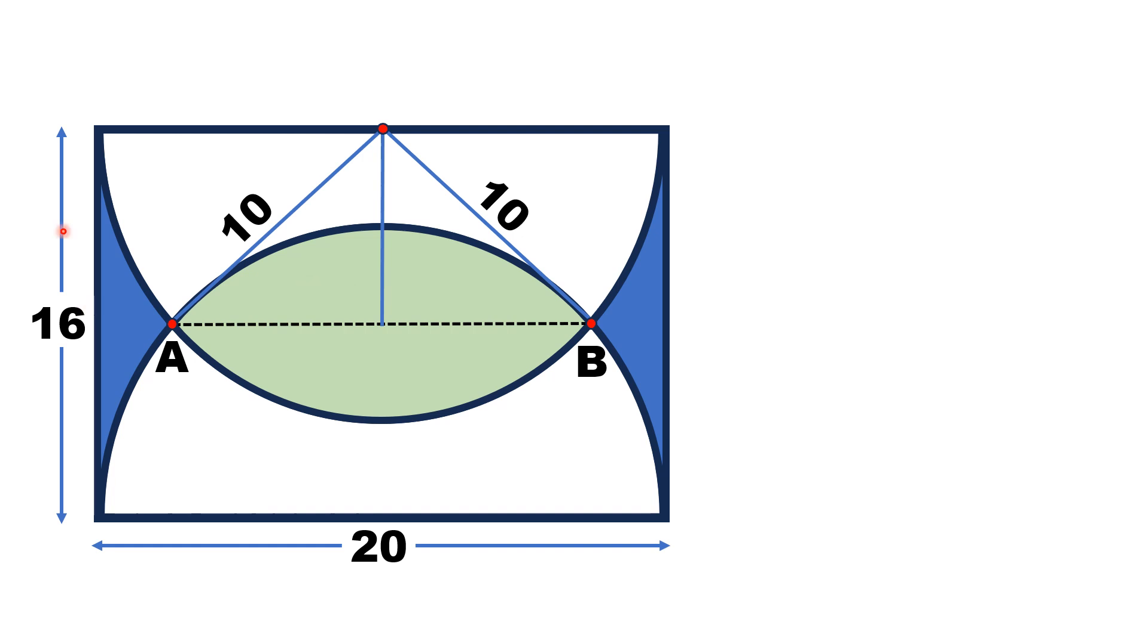now this line segment has length equal to half of the width of the rectangle because of the symmetry of the figure. The breadth of the rectangle is 16, so this line segment has length equal to 8 units.